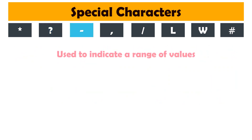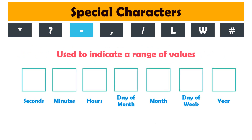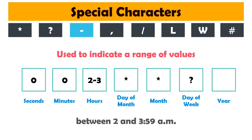Minus is used to indicate a range of values. For example, if we want to trigger the bot between 2 and 4 o'clock, then we set the hours field with '2-3'. This means that the bot will be triggered between 2 and 3:59 a.m.